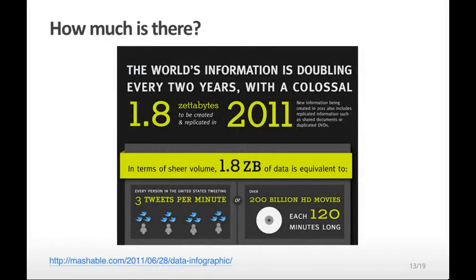So how much data is out there? This is an infographic that suggests that there's 1.8 zettabytes of data that were created in 2011. You might dispute this exact number, but it gives you an idea of the order of magnitude of how much data is out there. What is 1.8 zettabytes? It's equivalent to 3 tweets per minute for every person in the United States, all 300 million, tweeting every minute for about a year. That's a lot of information. But not all of that information is useful, just like not all tweets are useful.